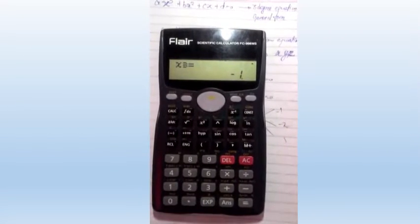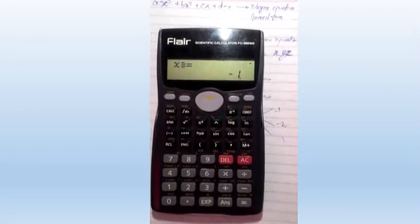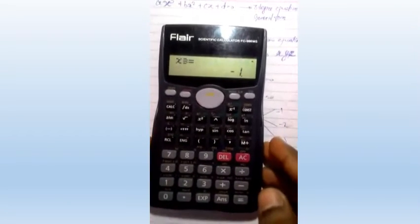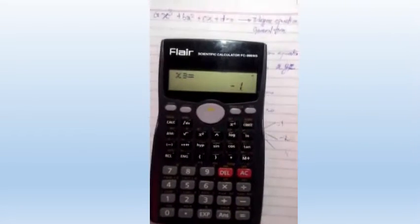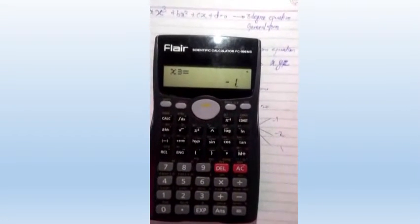Here we are with our new video on solving a three-degree equation using a calculator. The general form of a three-degree equation is written over here: ax³ + bx² + cx + d.